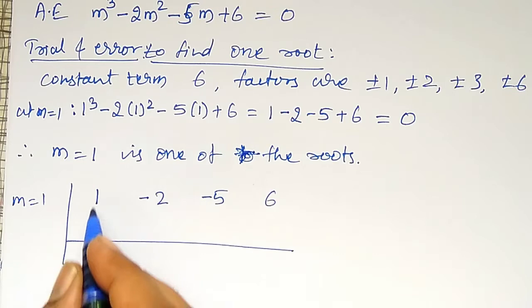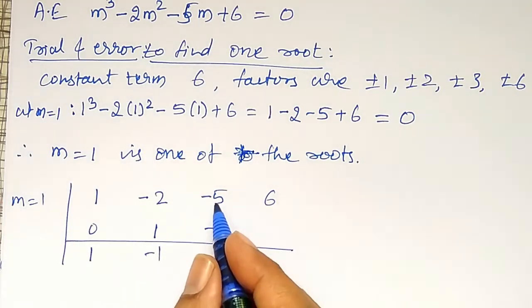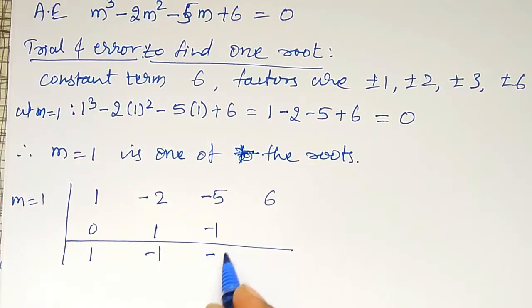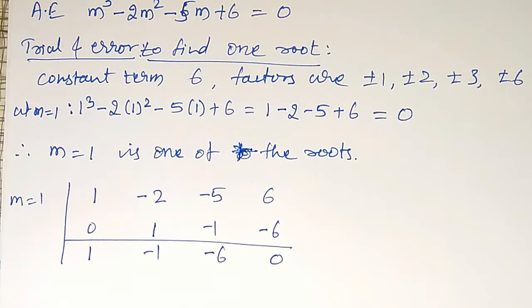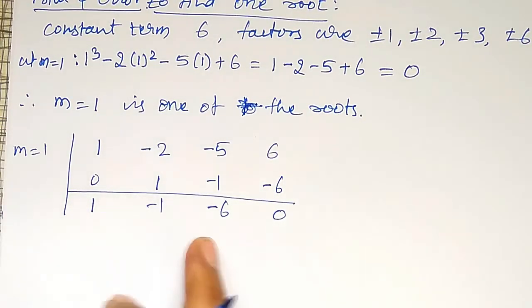First term with 0 added 1, 1 into 1, 1. Now add them, minus 1, minus 1 into 1, minus 1, minus 5, minus 1, equal to minus 6. Add them, minus 6 into 1, minus 6. Therefore, last you should get 0. And whatever the remaining terms are there, they are the coefficients of quadratic equation.